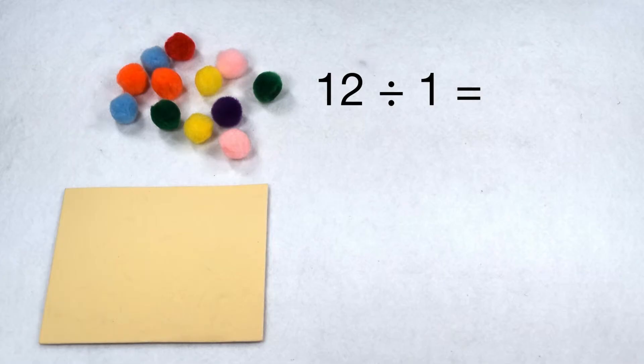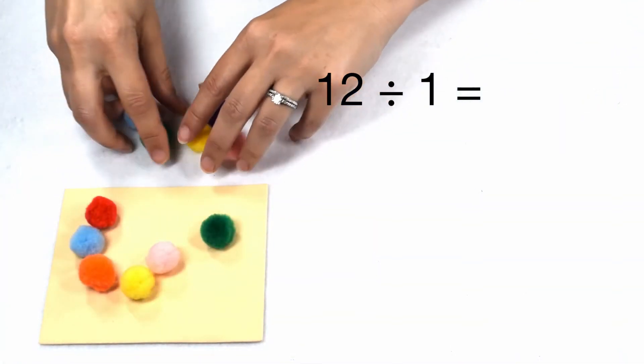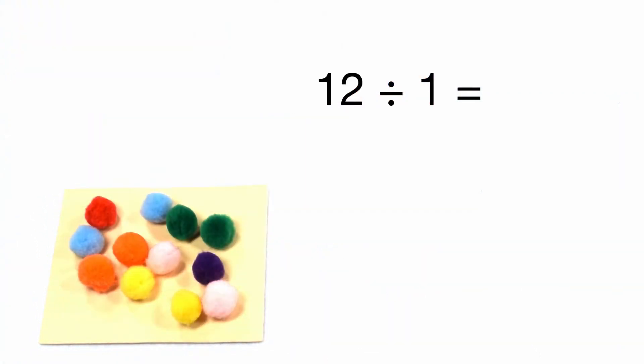Well, if I want to arrange my 12 items into one group, again, that means everything is going to have to go into that one group. So 12 divided by one gives me 12.